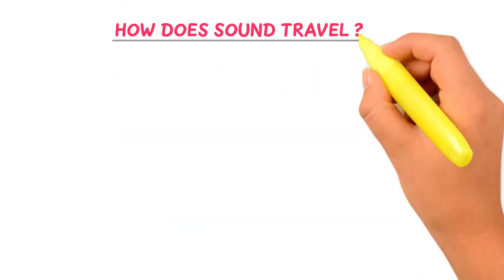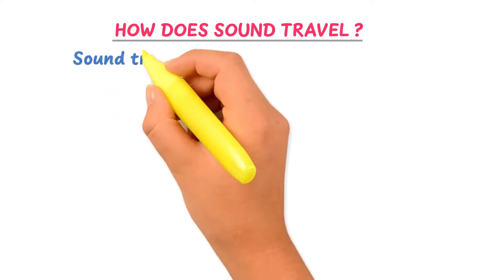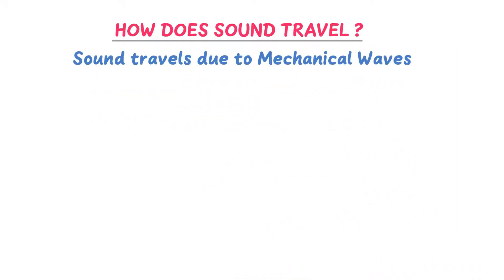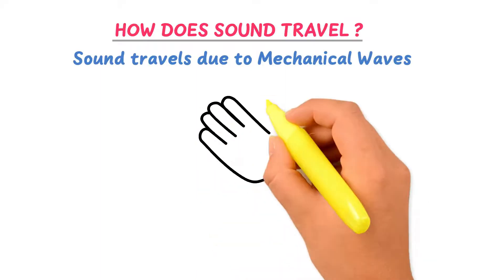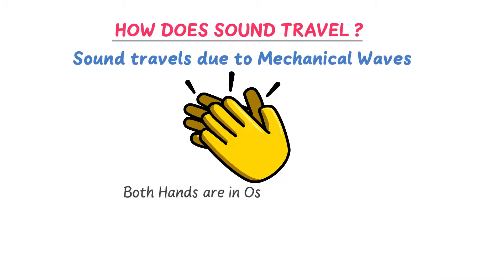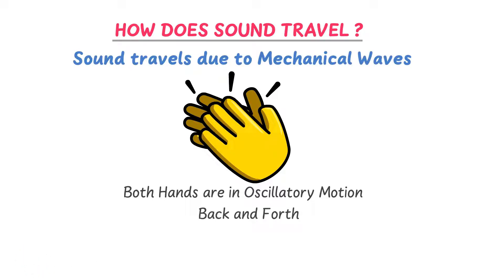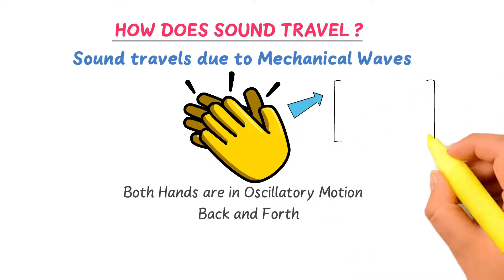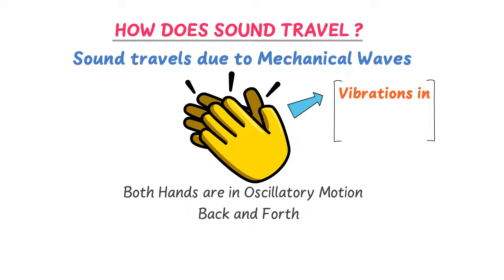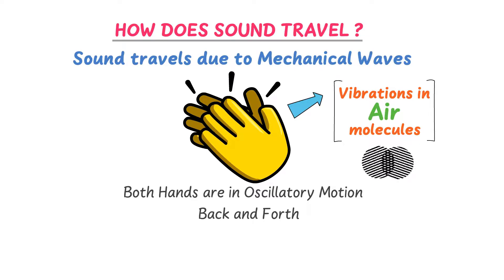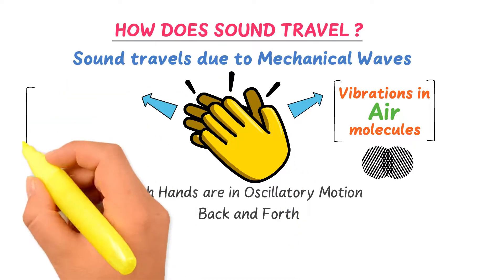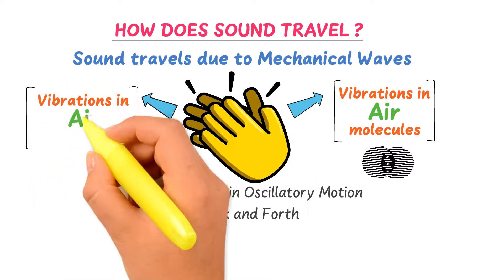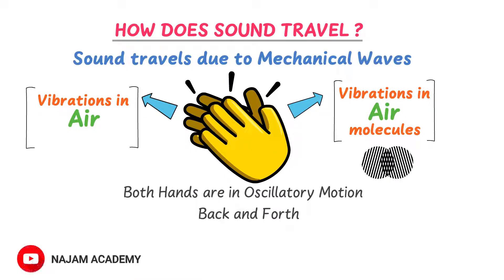Now, how does sound travel, or how do we receive sound? Sound travels from one place to another due to mechanical waves or mechanical movement. For example, consider the clapping motion of your hands. During clapping, both your hands are in oscillatory motion — you move both hands back and forth — and as a result your hands produce sound. The oscillatory motion of your hands causes vibrations or disturbance in the air molecules, which in turn causes other molecules of the air around them to vibrate. These vibrations from one molecule to the other help sound to travel.